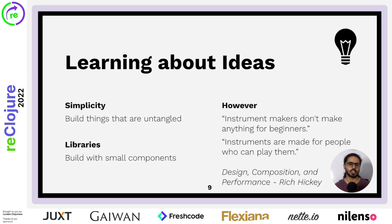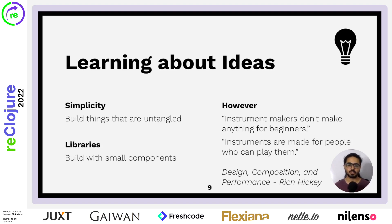However, there was this talk — Design, Composition, and Performance — in which Rich talked about Clojure as something akin to an instrument, that instruments are made for people who can play them. Instrument makers don't make anything for beginners. And I see the ideas behind that. I understand why instrument makers don't make anything for beginners — you don't make a simplified cello, you just make a cello. However, making music and creating software does not have to go through these trials of learning an instrument.